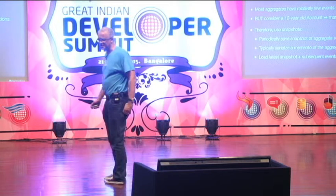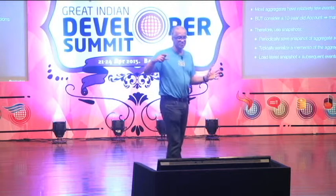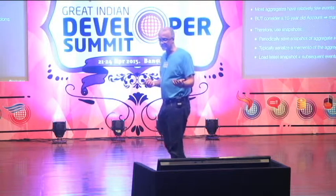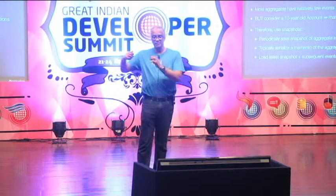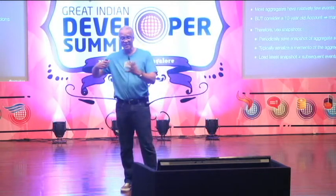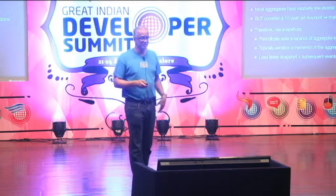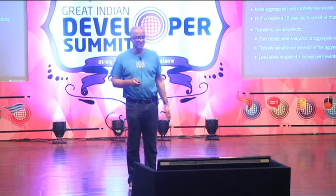You might wonder: what if I have an account that's been open a very long time — that's a very large number of events to load and replay. The standard approach is to periodically create snapshots of the current aggregate state and save those in the event store — essentially a memento pattern. To reconstruct current state, you find the most recent snapshot and then find and replay only the events that have occurred since that snapshot. So you never have to go back to the beginning of time and process thousands of debits and credits.